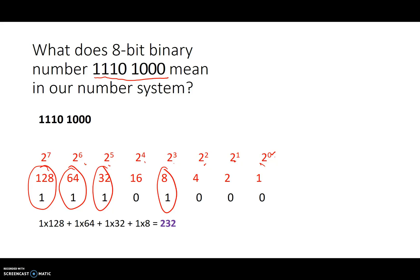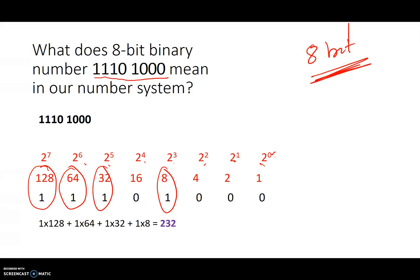That's basically how we represent a binary number system string and understand it as our number system — how we go from a computer's number system to our number system. The reason I brought up an 8-bit example is because later on we're going to look at the Arduino, and the Arduino uses 8-bit-wide number systems. The Arduino is an 8-bit computer. It can do larger numbers, but most of our discussion will be limited to 8 bits.